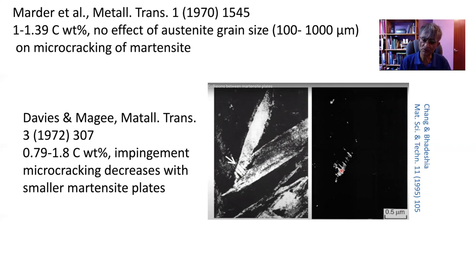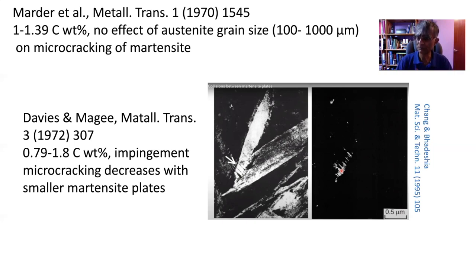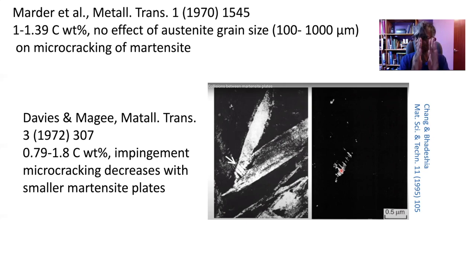Davies and Magee also pointed out that crystallography would play a role. For example, if you have two plates with a 2-2-5 habit plane and a 2-5-2 habit plane and they collide, there will be a certain angle between those colliding plates. If the plates have a crystallography which makes them roughly parallel, then such collisions are less likely.